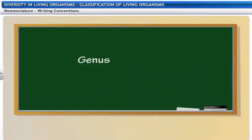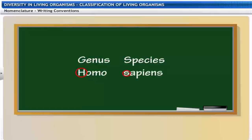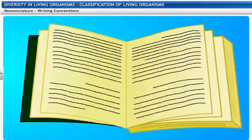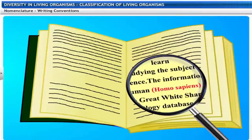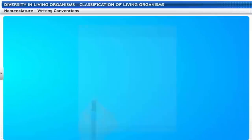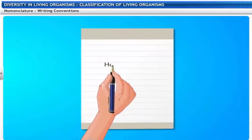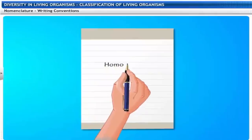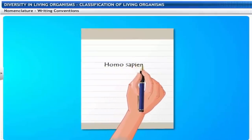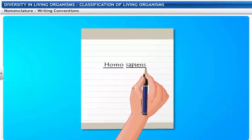Certain conventions are followed while writing scientific names. The name of the genus begins with a capital letter, and the name of the species begins with a small letter. When printed, the scientific name is given in italics, and when written by hand, the genus name and the species name have to be underlined separately.